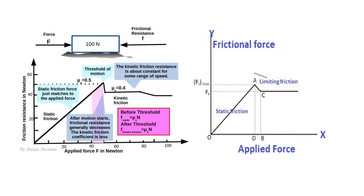Look at this graph, with an object of 100 Newtons. The x-axis shows the applied force we exert, and the y-axis shows the frictional resistance force in Newtons. When we exert 10 Newtons, the object does not move, so static friction is also 10 Newtons. When we exert 20 Newtons, the object still does not move, so static friction is 20 Newtons. When we increase to 30 Newtons, still not moving, so static friction is 30 Newtons.